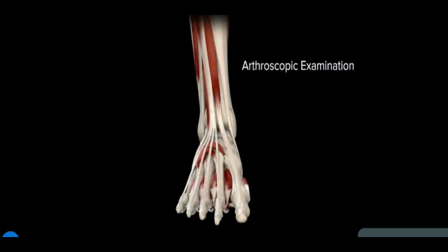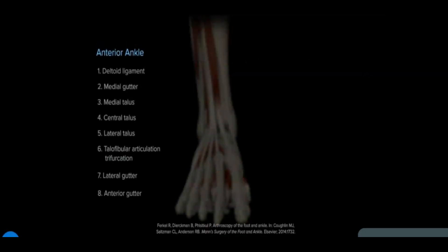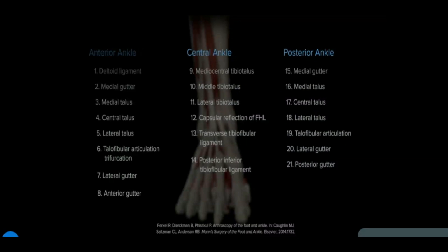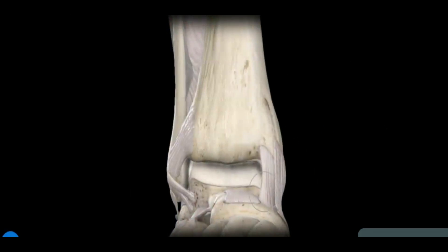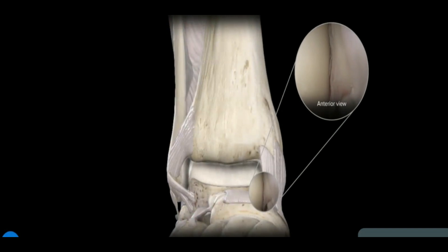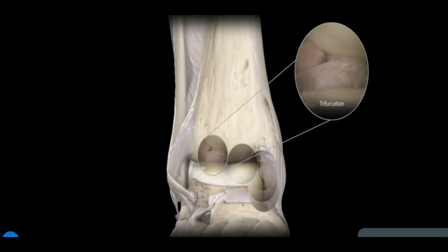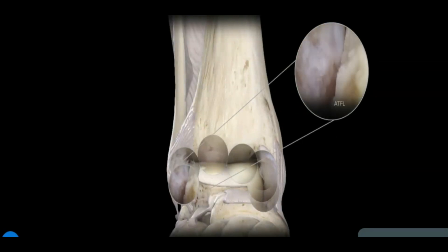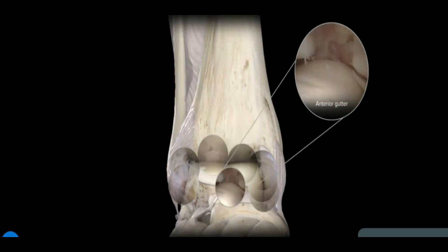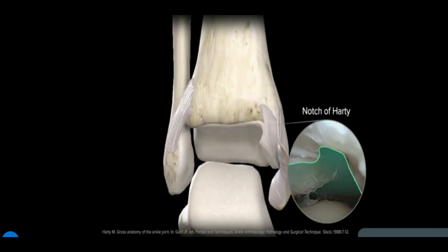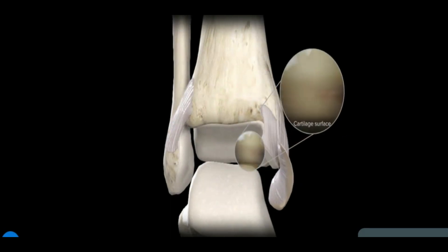A widely accepted approach developed by Ferkel and colleagues is the 21-point exam, which assesses 8 anterior points, 6 central points, and 7 posterior points. Anterior and central points are viewable through anterior portals; posterior points require posterior ankle arthroscopy. From an anteromedial portal view of a right ankle, one can examine the deep portion of the deltoid ligament, medial portion, central overhang, and laterally to the trifurcation of the tibia, talus, and fibula. At 45 degrees, the ATFL with its fascicles and the lateral and anterior gutter are visible.